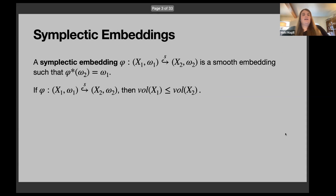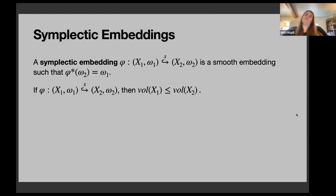This is about symplectic embeddings. A symplectic embedding is a smooth embedding such that the two-form on the target pulls back to the two-form on the domain. Whenever we have a symplectic embedding, because the two-form induces a volume form, we know the volume of X₁ must be less than or equal to the volume of X₂. So we always have the volume obstruction.